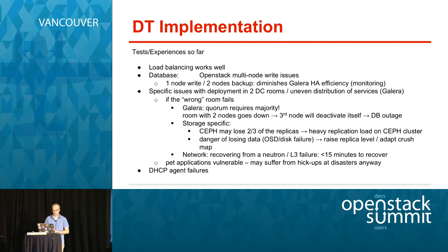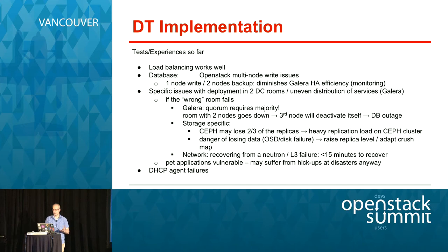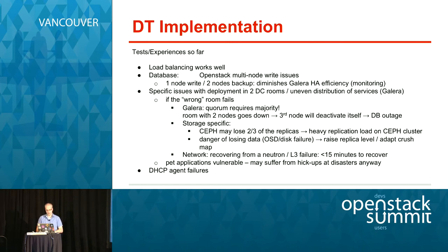On Neutron, we have multiple DHCP agents and use Pacemaker and Corosync as well. On API endpoints, we have load balancing with round-robin distribution. For storage, we use Ceph clusters with RBD for persistent volumes and object storage S3. The load balancing in general works very well. With the database, multi-node writes don't work well — one node is the master and the other two are backups, which diminishes the HA capabilities of Galera significantly.